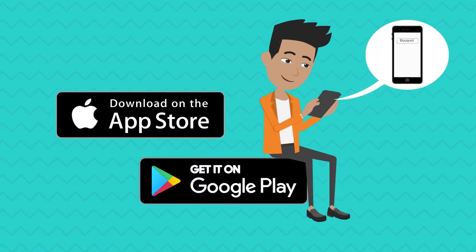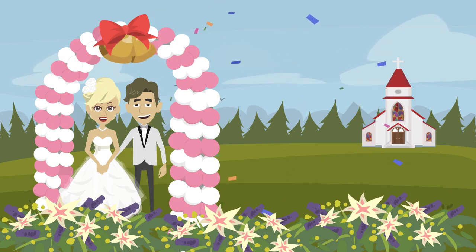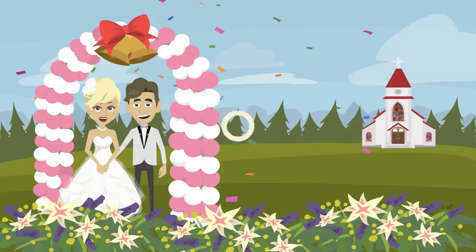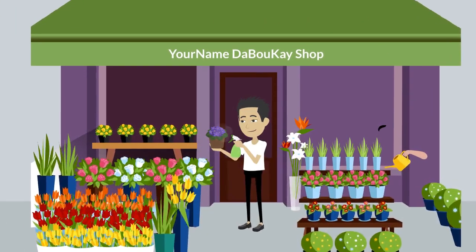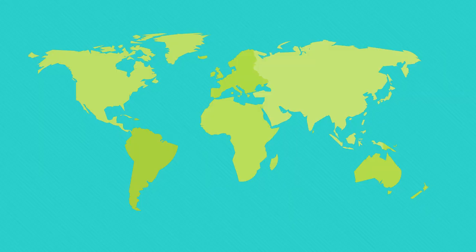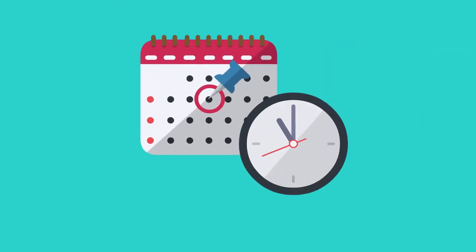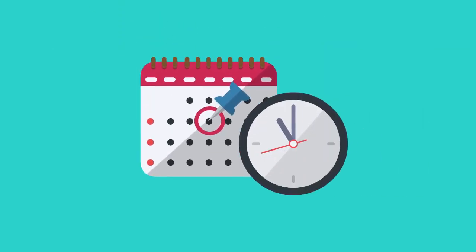The Bouquet iOS and Android app users will be able to search for a digital bouquet for any occasion, holiday, or festival, and will be automatically directed to the Bouquet customer's shop nearest to their geolocation. App users will also be able to make a purchase and designate the receiver's name and method of delivery by either email or phone number, write a personal note, and schedule a date and time for the delivery.